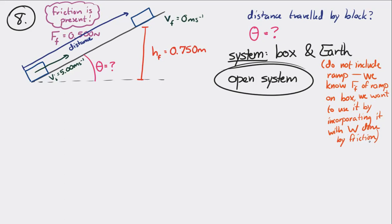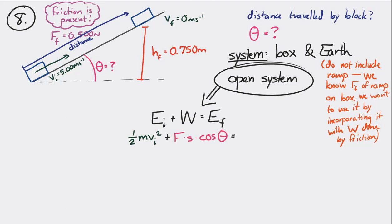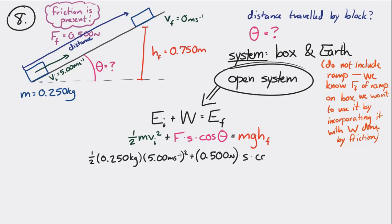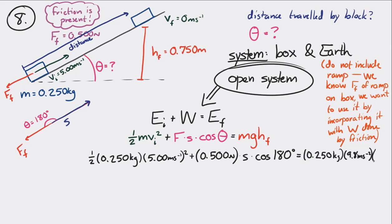So not including the ramp, this is an open system. At the beginning it only has kinetic energy, one-half mv squared. Then there's some work done by friction: Fs cosine theta. That equals the total energy at the end, which is only gravitational potential energy. The friction force is opposite the motion, so the angle between the force and displacement is 180 degrees. That equals 0.25 kilograms times 9.8 meters per second squared times 0.750 meters.